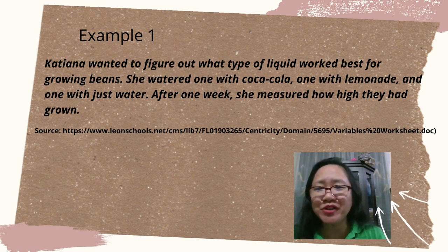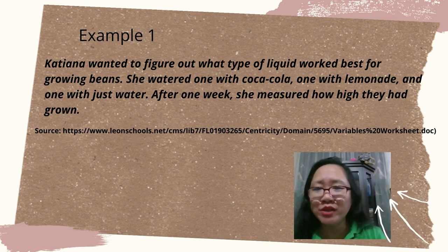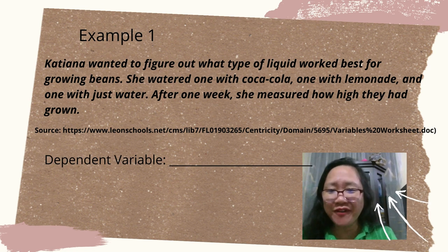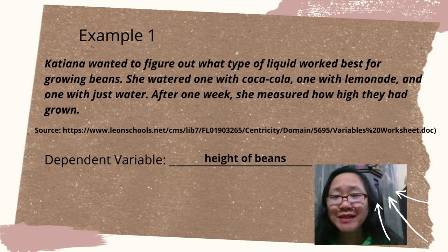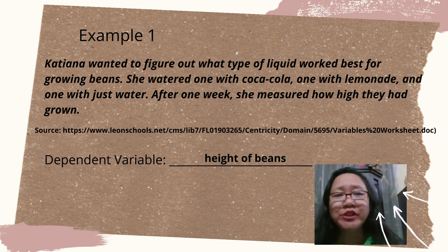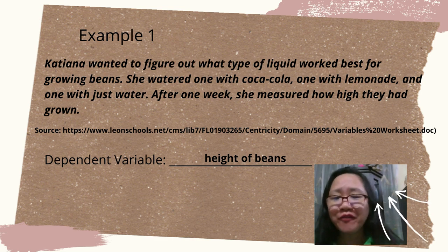Let's have example one. Katriana wanted to figure out what type of liquid worked best for growing beans. She watered one with Coca-Cola, one with lemonade, and one with just water. After one week, she measured how high they had grown. Can you identify the dependent variable? The dependent variable is height of beans.